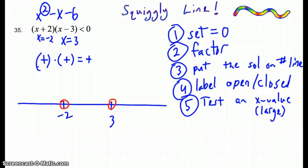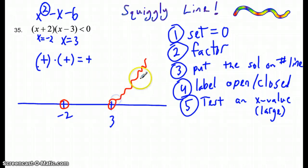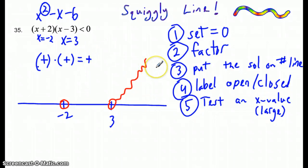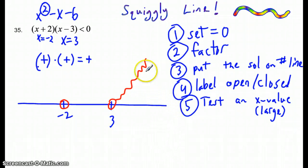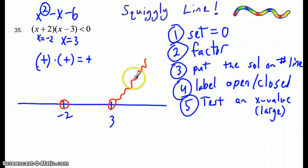What happens when I multiply a positive number times a positive number? I get a positive number. So my graph is going to start up here — above the line. Because when I plugged in some value bigger than 3, like 4, if I plugged in 5, 6, 7, 8, 9, or 10, all of those answers would have been positive. All I care about is that in this interval of the graph, it's positive.